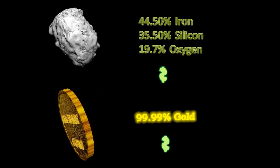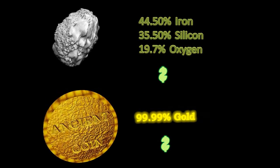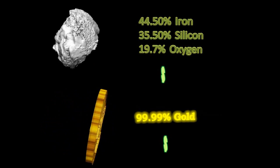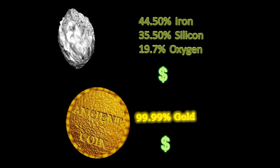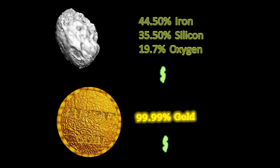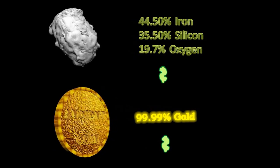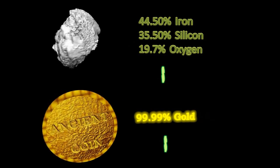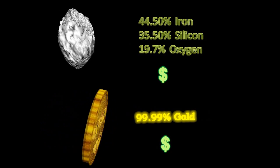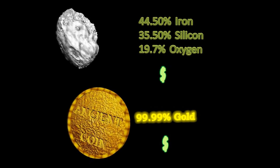This makes it possible to measure the composition of a material, such as an ancient coin or even a meteorite, in order to find out its true value.